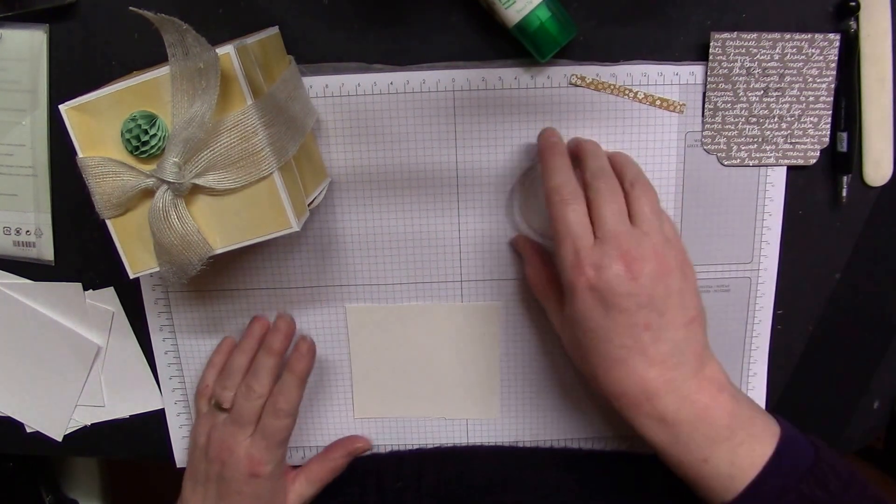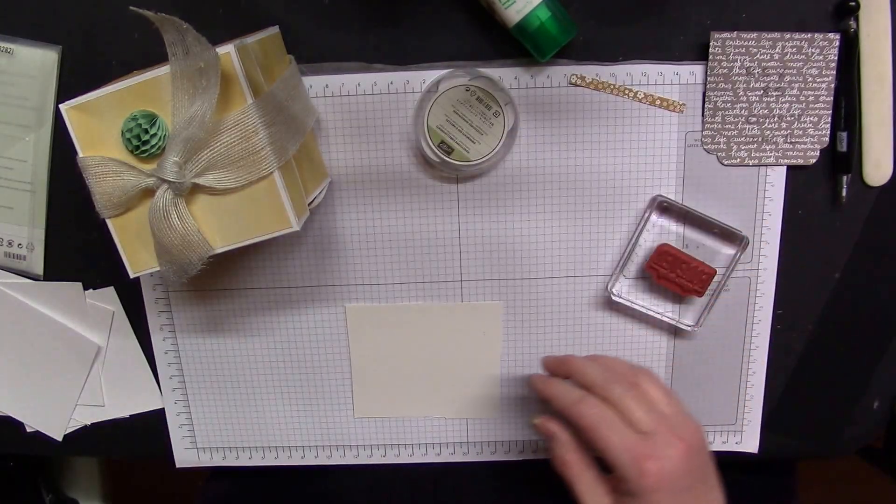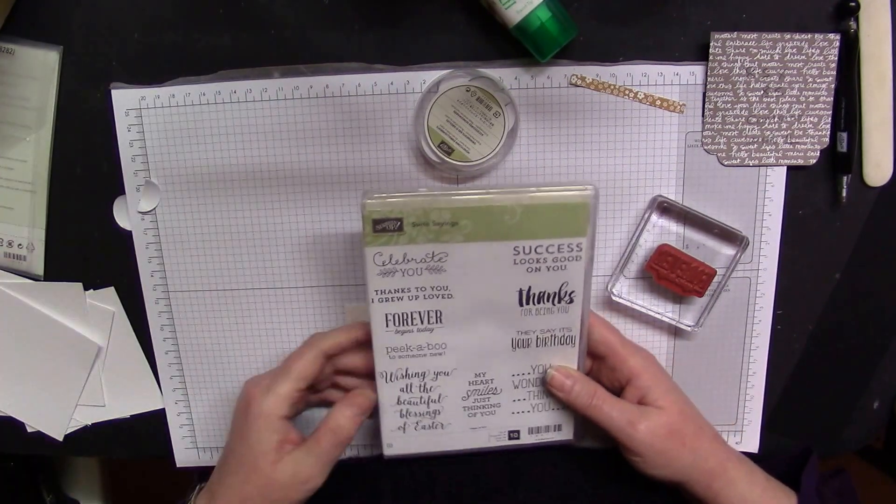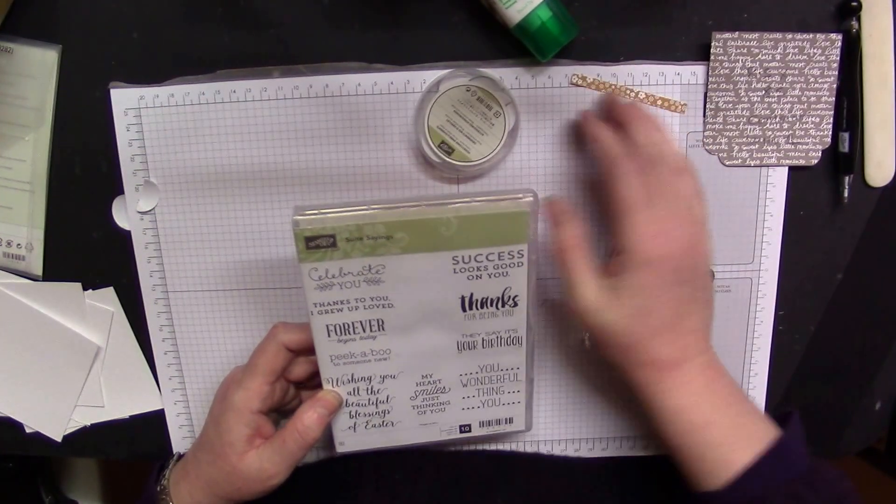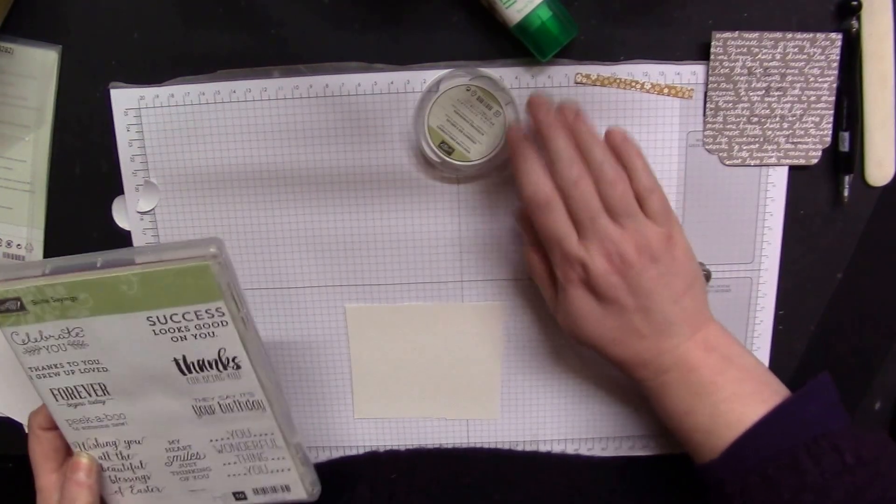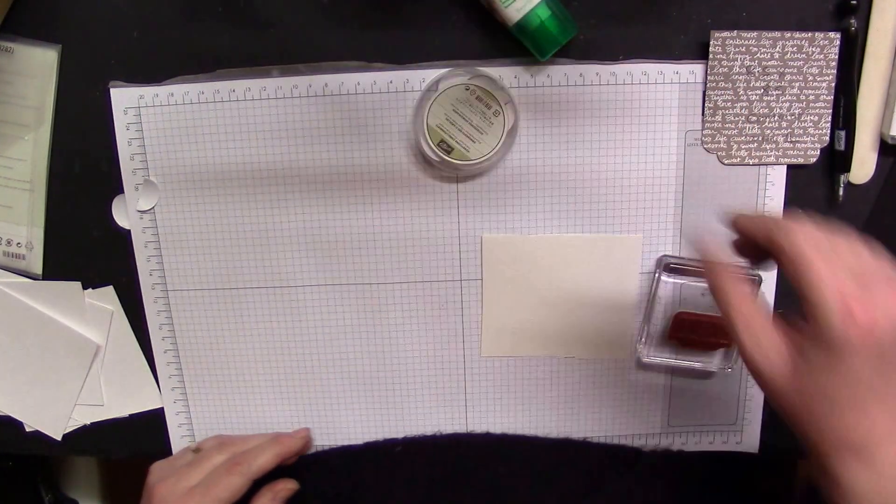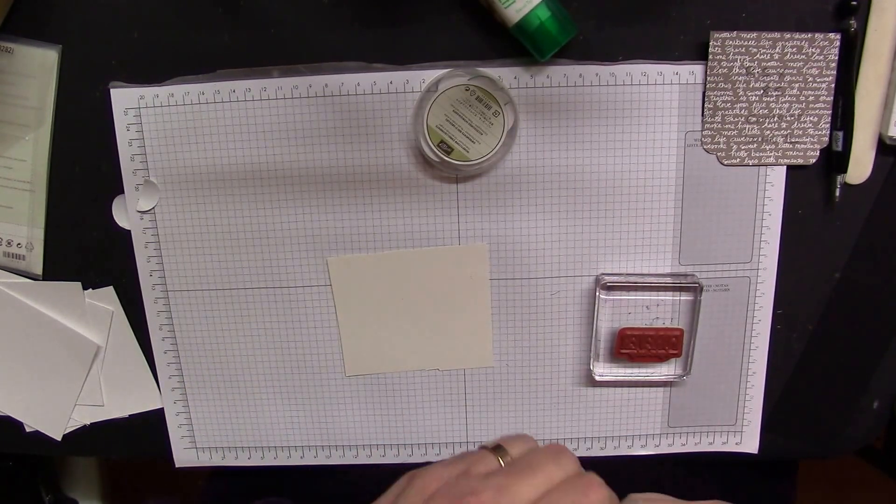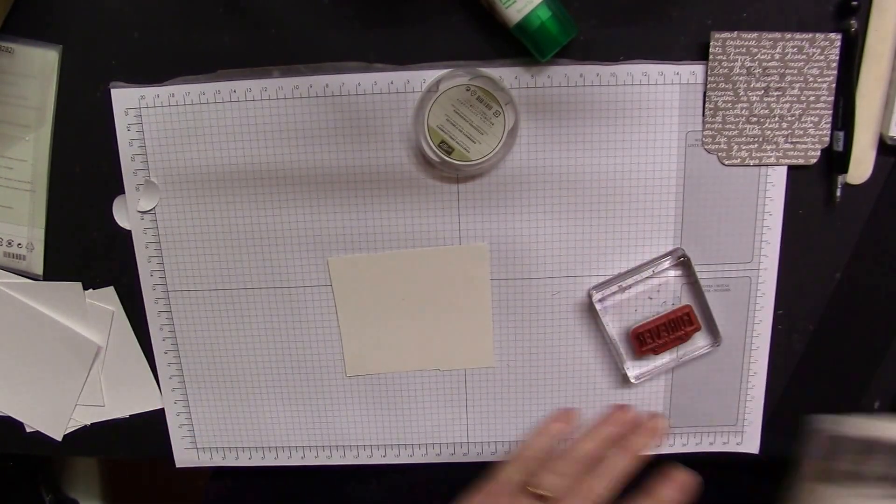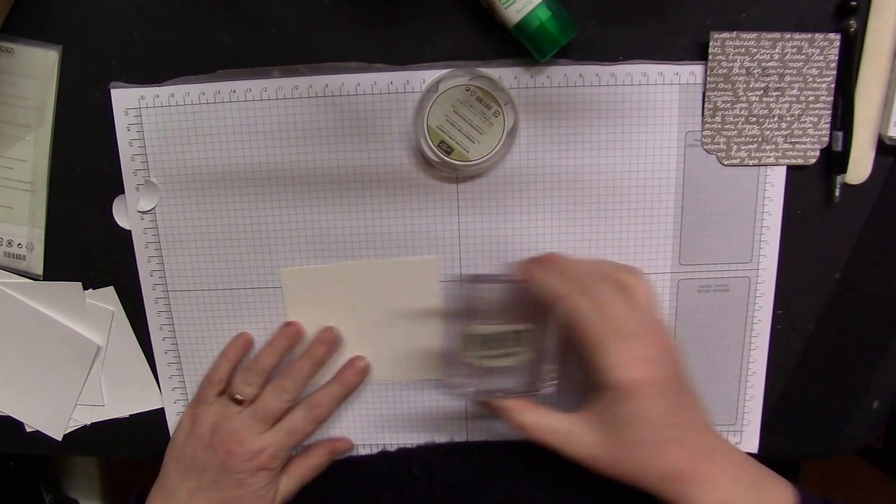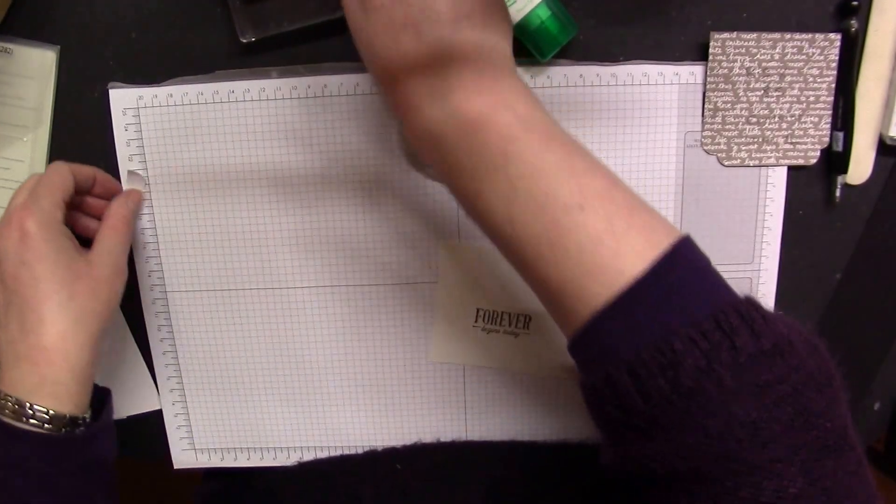And then I've got a piece of Shimmery Whisper White cardstock here. I'm using a sentiment from the Sweet Sayings stamp set. I'm using Forever Begins Today because I thought I made this thinking of a new baby, so that's why I've used this sentiment. Basic black ink onto some nice shimmering white cardstock. There. And then we're going to die cut the sentiment.